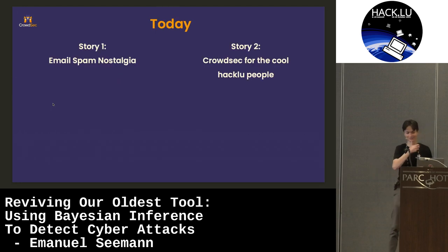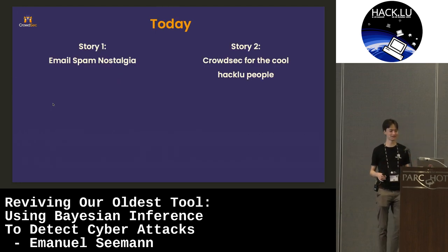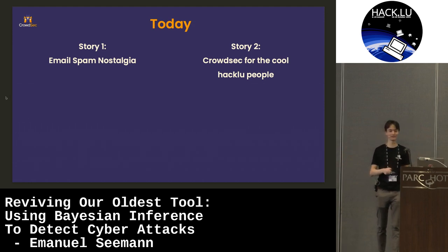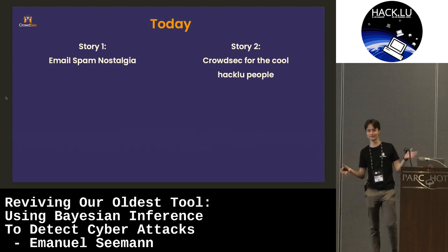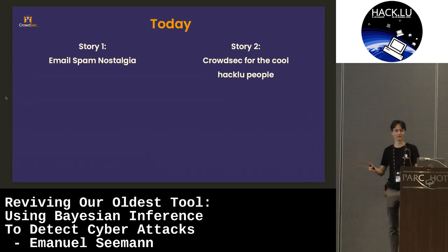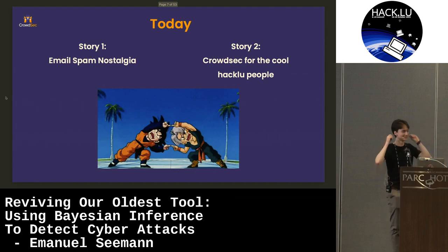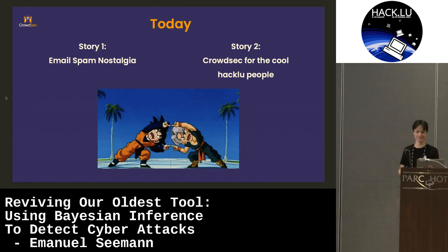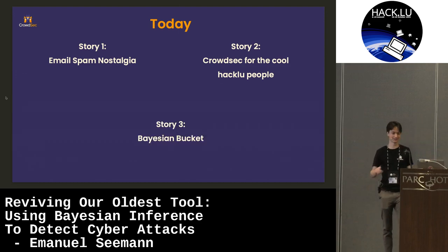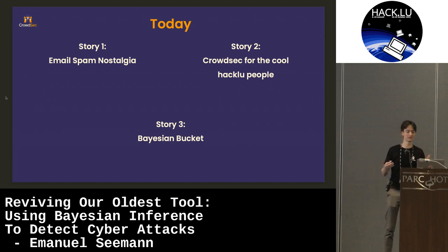So today we have two stories. We have one which is email spam nostalgia. And the second story is CrowdSec for the cool new people — initially this was CrowdSec for dummies, but you all here aren't dummies. And then we put on our earrings and do some Goku fusion, and then we get the third topic, which is the Bayesian bucket that I want to talk about. The first two will have a little bit less context with each other, but we'll do some nice fusion to get them together.